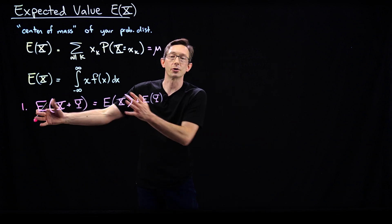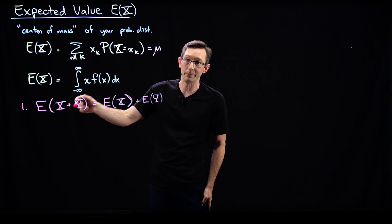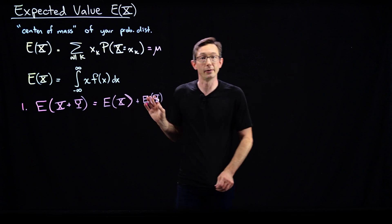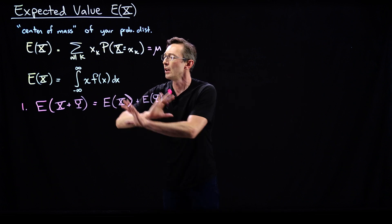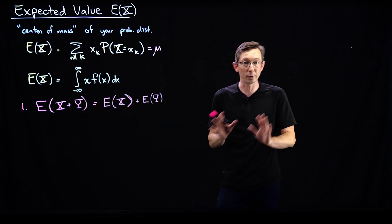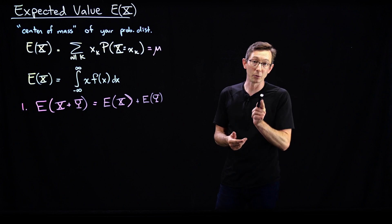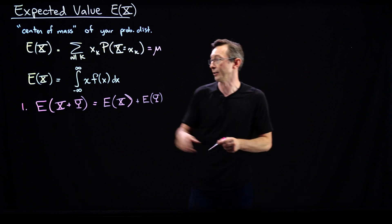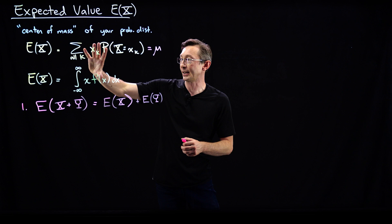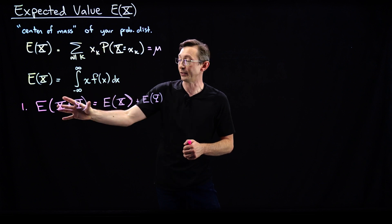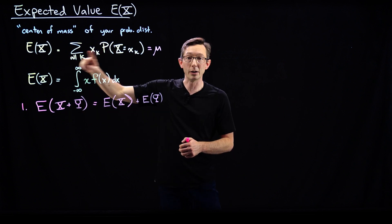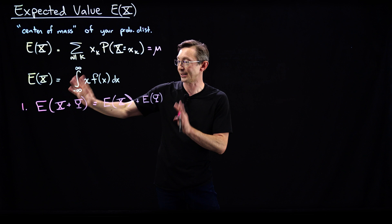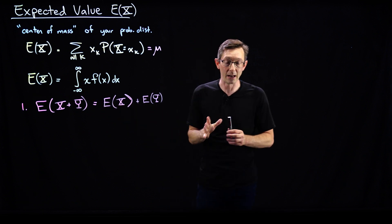And this works for larger sums: the expected value of x plus y plus z is the sum of those three expectation values. Super, super useful property. This is a good one for you to just verify yourself — you can pause the video and use these formulas to convince yourself that this is true for a discrete random variable or for a continuous random variable.